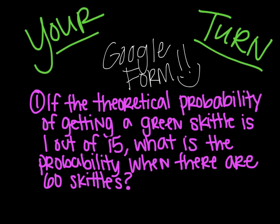Your turn. You are going to put this on a Google form. If the theoretical probability of getting a green Skittle is 1 out of 15, what is the probability when there are 60 Skittles? What would that probability be? So make sure you're showing all your work on your paper and then put your answer on the Google form.